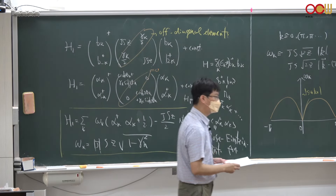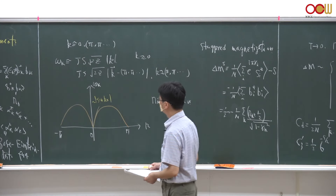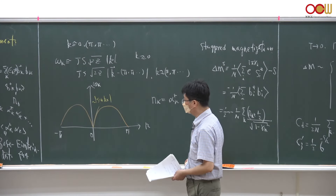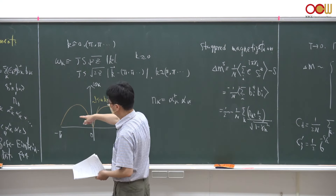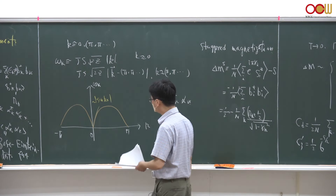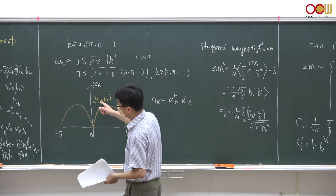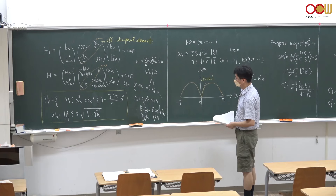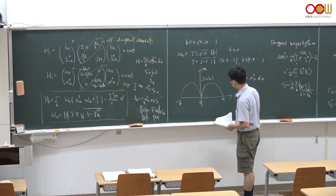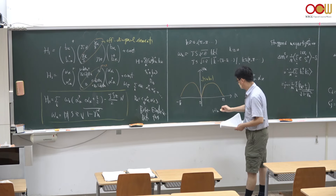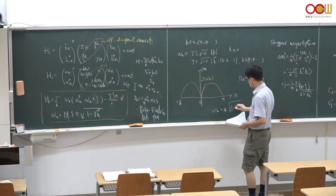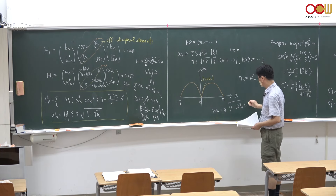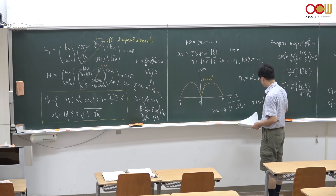Once we apply the Bogoliubov transformation, the resulting Hamiltonian H1 is expressed in terms of omega_k — the boson frequency — multiplied by the Bogoliubov occupation number alpha-dagger alpha plus one-half, plus an overall constant. omega_k is given by |J| * s * z * sqrt(1 - gamma_k^2). We can plot this Bogoliubov dispersion omega_k versus k; for the one-dimensional case, omega_k is proportional to |sin(k)|.